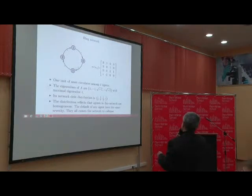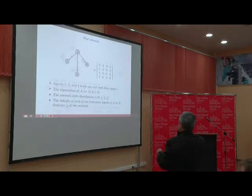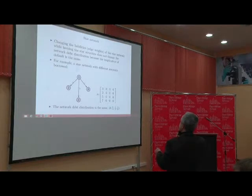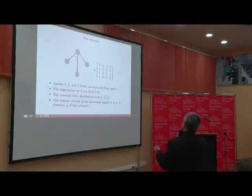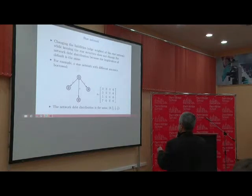Here we have four firms, and they are all equally important — if one of them goes, everything goes. For N firms we will have N entries summing to one. In the star network, there is a principal lender and three borrowers; if any of the borrowers goes, they take one-third of the network. If you change the lending amounts — say one unit is lent by one to each — nothing changes. You still get the same network debt distribution, which is a nice property.